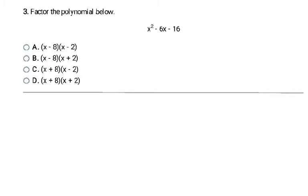This next example is a trinomial — tri meaning three, just like in tricycle — so it has three terms: one, two, three. When you have a trinomial, you're going to want to see if you can factor it by breaking it into two sets of parentheses, after you check for a greatest common factor. Here we have 1, 6, and 16 — the biggest number they have in common is 1, which we don't factor out — and we have x squared, x, and nothing in common for variables. So there is no greatest common factor here.